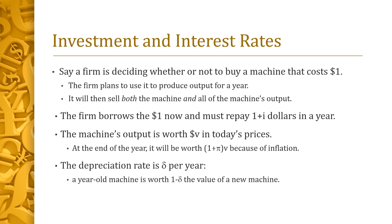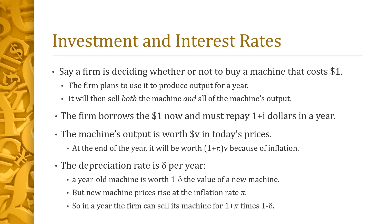At the end of the year, the firm can sell the output for 1 plus pi times v dollars, since the price of output rises at the inflation rate of pi. A used machine is also worth less than a new one — after a year's use, the machine is worth delta percent less, where delta is the depreciation rate (typically 10–15% for a vehicle). While the machine depreciates, the price of new machines rises at pi percent per year. The sales price of the machine is therefore 1 plus pi times 1 minus delta.